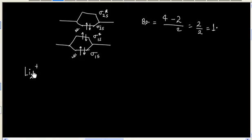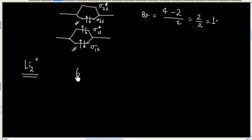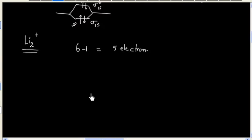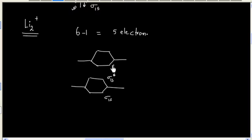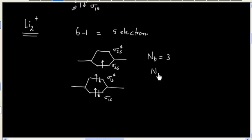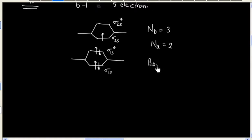Let us find bond order for Li₂⁺. It has 6 minus 1, so 5 electrons. We can write the molecular orbital diagram. We have 3 electrons in bonding orbitals and 2 electrons in anti-bonding orbitals. So bond order is (3 minus 2) divided by 2, that is 0.5.